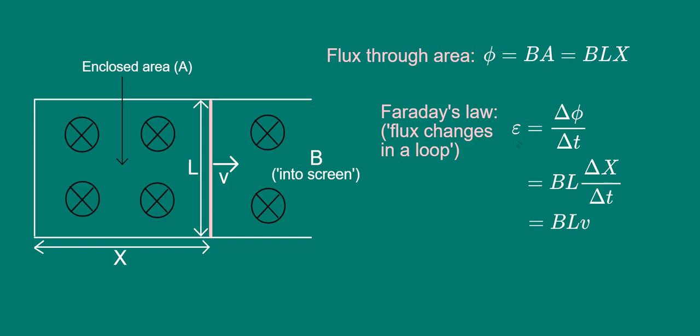What we've ended up with here should hopefully ring a bell. It's simply Faraday's law for cutting field lines, introduced in the second video in the playlist. This is hardly surprising, since this is exactly what's happening as the pink conductor moves right. This example of induction can thus be analyzed from the point of view of either cutting field lines, type 1 induction, or flux changes in a loop, type 2 induction.